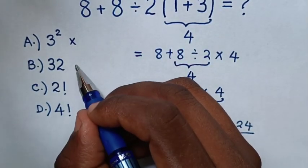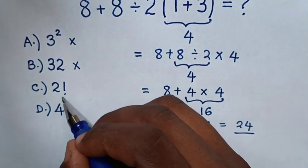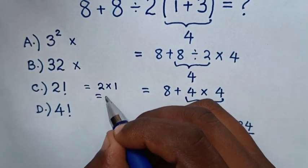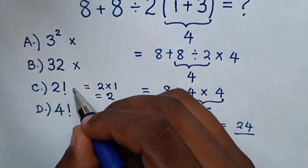B, 32, is wrong. C, 2 factorial, which is same as 2 times 1, which is equal to, this times this is 2. So, this is also wrong.